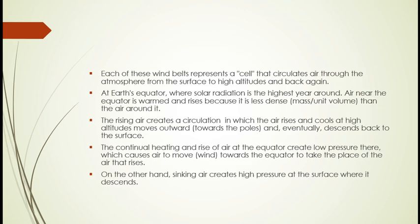Each of these wind belts represents a cell that circulates air through the atmosphere from the surface to high altitude and back again. Warm air rises and cold air goes down. At Earth's equator, where solar radiation is highest year around, air near the equator is warmed and rises because it is less dense — density is defined as mass per unit volume — than the air around it. The rising air creates a circulation in which the air rises and cools at high altitude, moves outward towards the poles, and eventually descends back to the surface.